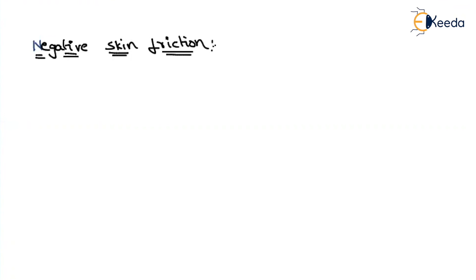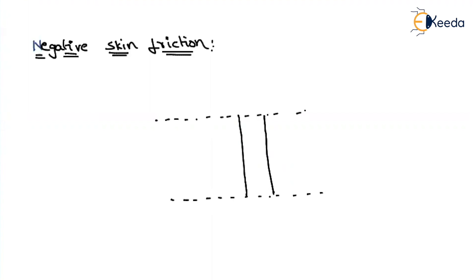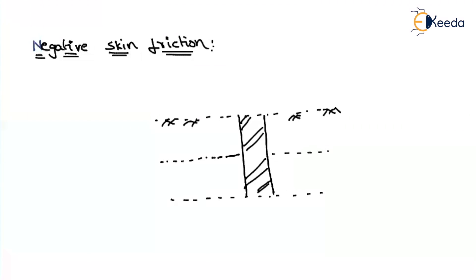So for this, let us consider a pile like this. Along the length of the pile, let us imagine we are having two different soils. The top soil is filled with loose or soft soil, and below it let us imagine we are having some dense soil.